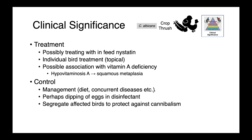Treatment of these infections depends on how many birds are affected — it's possible to treat them by feeding nystatin or to treat individual birds topically. There can be an association of crop thrush with hypovitaminosis A, which leads to squamous metaplasia. Management factors include ensuring an adequate balanced diet, controlling concurrent diseases and immunosuppressive conditions, potentially dipping eggs in disinfectant (though this is controversial, as it can affect egg cuticles), and in an agricultural setting, segregating affected birds to prevent cannibalism.